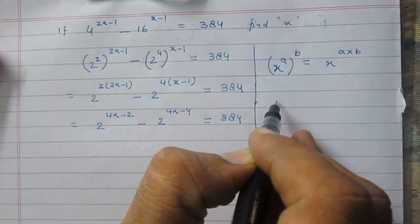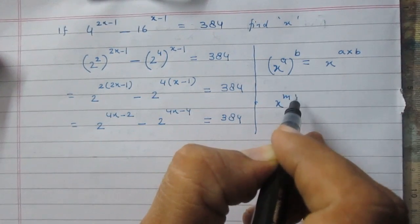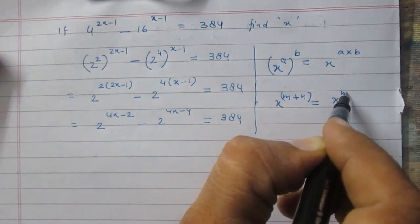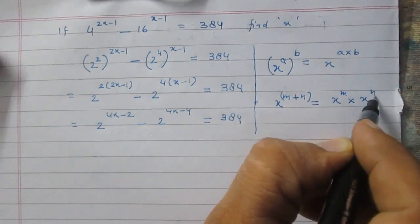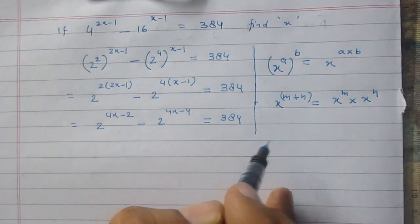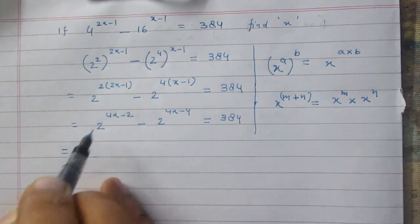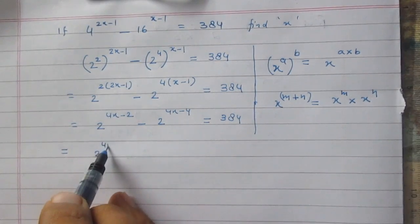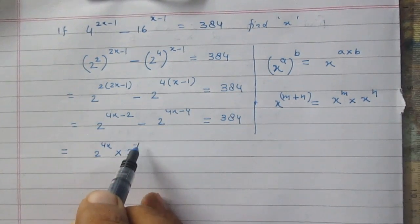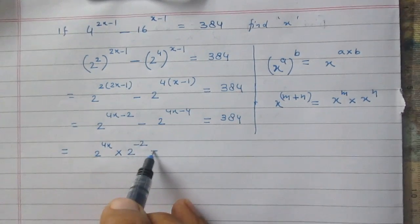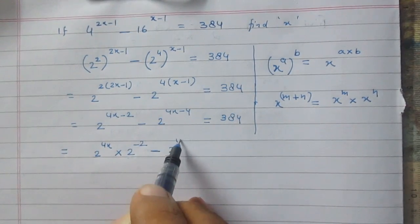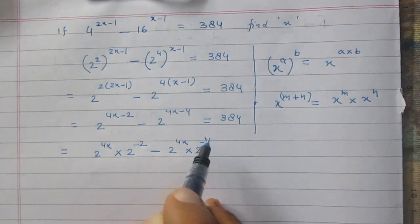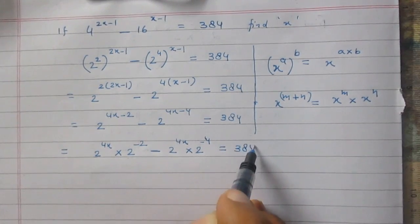We know that x raised to the power m plus n equals x raised to the power m multiplied by x raised to the power n. Using this rule, we write 2 raised to the power 4x minus 2 as 2 raised to the power 4x multiplied by 2 raised to the power minus 2, minus 2 raised to the power 4x multiplied by 2 raised to the power minus 4, equal to 384.